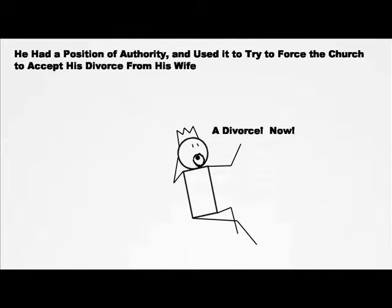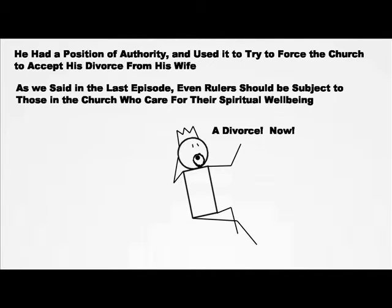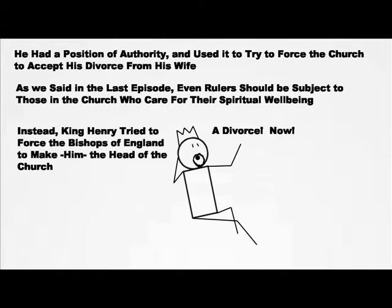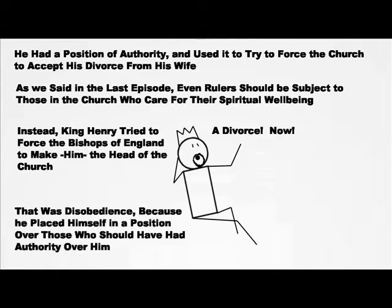A historical example would be King Henry VIII, who had a position of authority and used that position to try to force the Church to accept his divorce from his wife. As we covered in the last episode, even rulers should be subject to those in the Church who care for their spiritual well-being. Instead, King Henry tried to force the bishops of England to make him the head of the Church — that was an act of disobedience, because he placed himself over those who should have had authority over him.